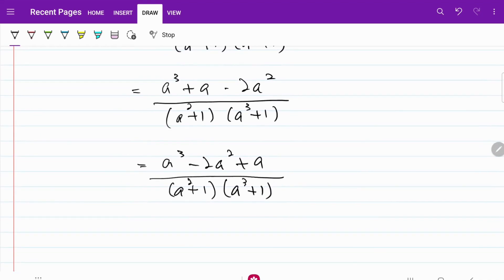From here, I can take out a as the common factor. So what I have is a times a squared minus 2a plus 1 over a squared plus 1, a cubed plus 1.